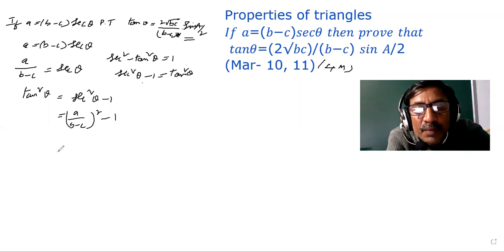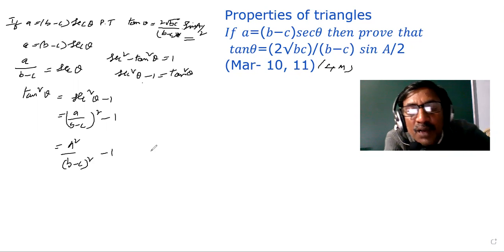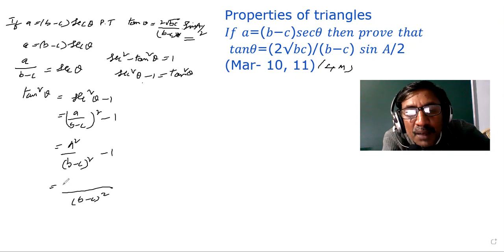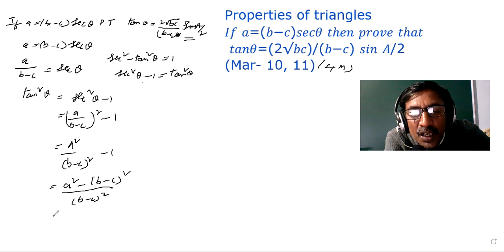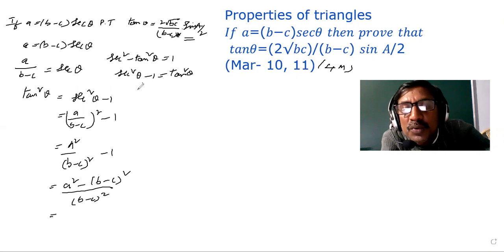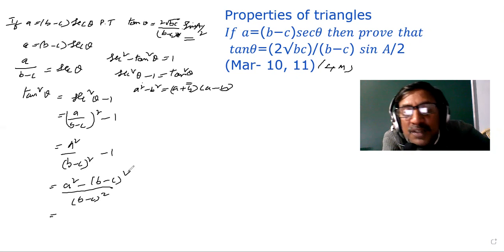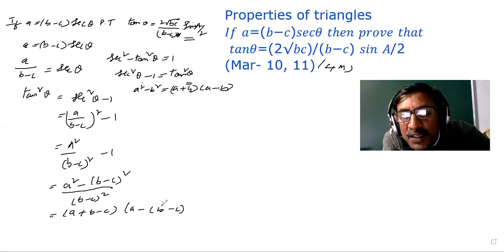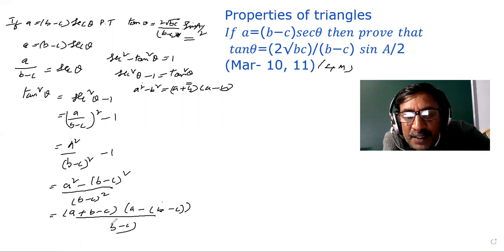This is equal to A squared divided by (b minus c) all squared, minus 1. Bringing the denominator across, this equals A squared minus (b minus c) all squared, all divided by (b minus c) whole square. Recall that A² minus B² equals (A plus B) into (A minus B).